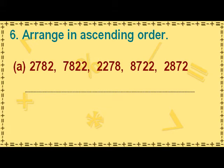The smallest digit in the thousands place is 2, which appears in three numbers: 2278, 2782, and 2872. Since it is the same in all three, we ignore the thousands place and look for the smallest digit in the hundreds place among these three numbers. We find that digit 2 is the smallest in the hundreds place in 2278, so this is the smallest number to begin with.